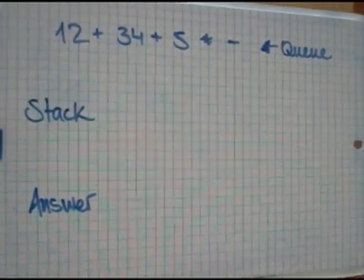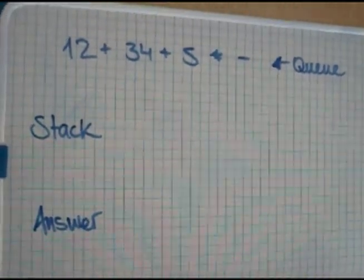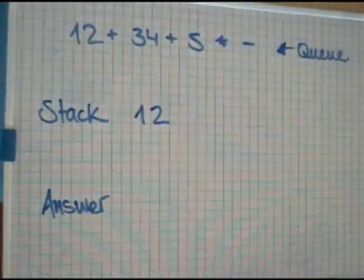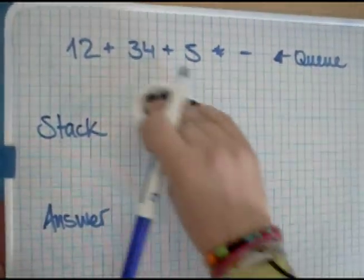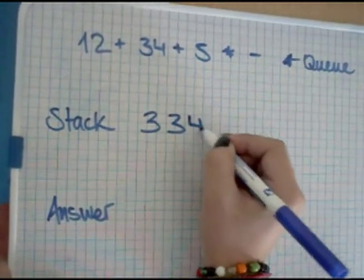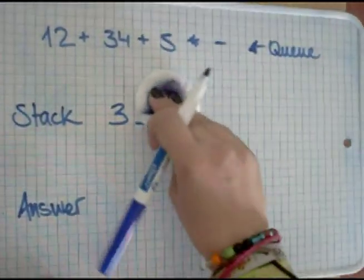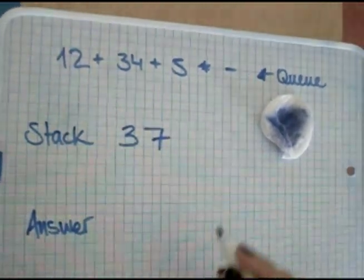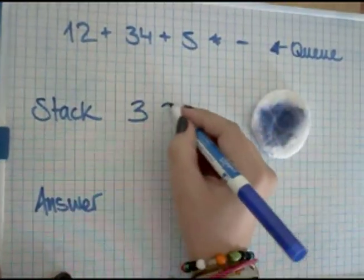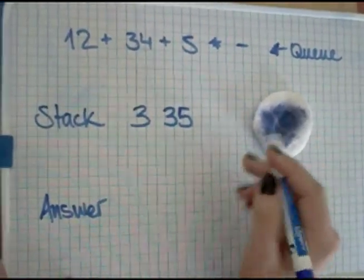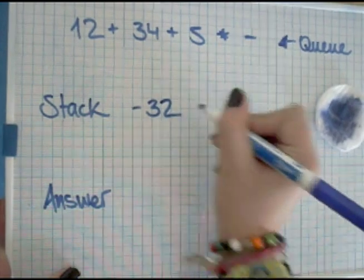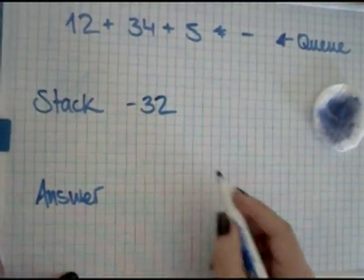Here's an example of what calculators do with a queue. We have the first two numbers that are directly going into the stack. We have an operator that adds these two elements. Then we have another two numbers directly into the stack, and another operator that adds them. Then another number directly into the stack, and another operator that multiplies them. And finally, the last operator that makes the operation between them. This gives us the final answer, minus 32.